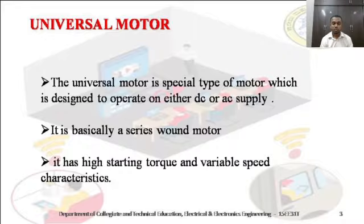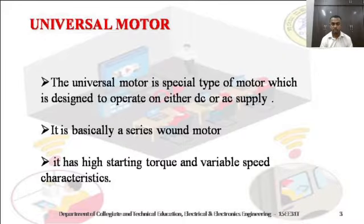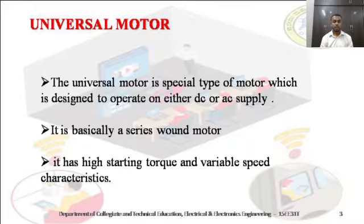It is also called a series wound motor because the armature and the field winding both are connected in series. Since both windings are in series, it will have high starting torque and variable speed characteristics. The starting torque is very high — we cannot start with no load; we have to connect a load. We can achieve different speeds in this universal motor.